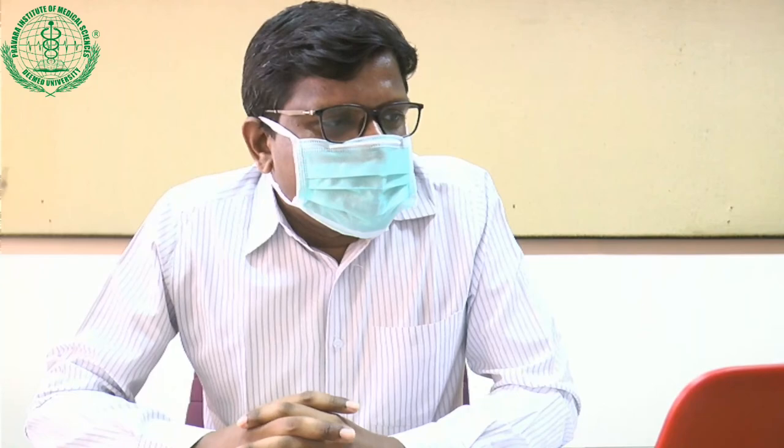We previously covered anatomy of the middle ear, anatomy of external ear and inner ear, and we also covered other topics. Today we are concentrating only on the complications of otitis media. Otitis media is an inflammation of part or all of the mucoperiosteal lining of the tympanomastoid compartments including the Eustachian tube, tympanic cavity, mastoid, and air spaces of the temporal bone. Complications of otitis media are defined as the spread of infection beyond the confines of the mucosa of the middle ear cleft.